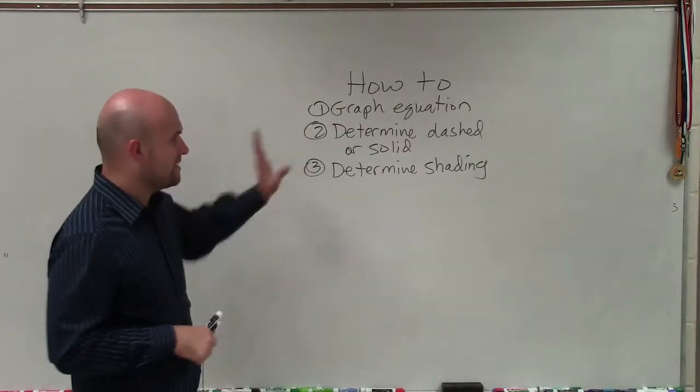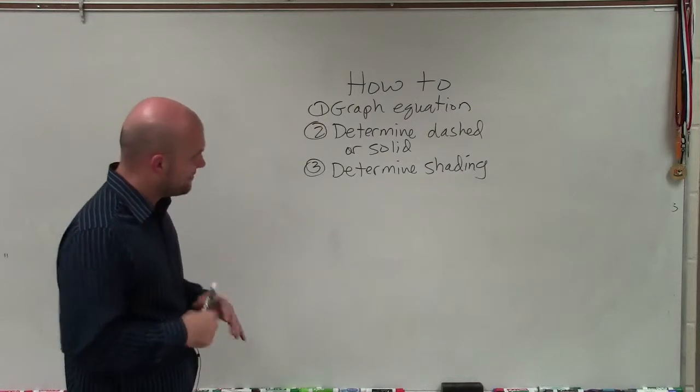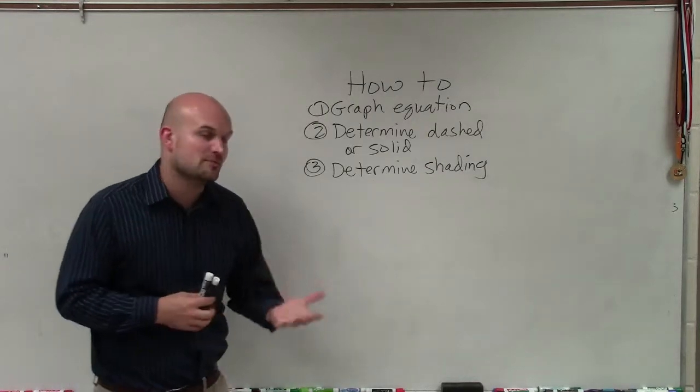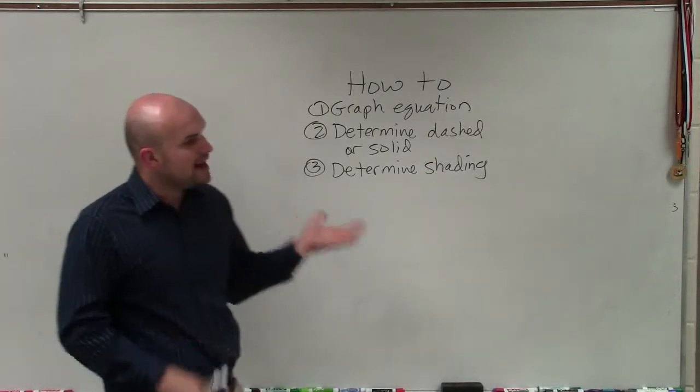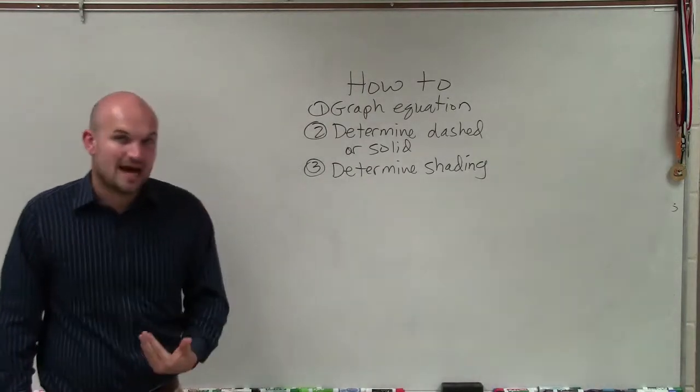Once we go ahead and graph, we have our slope, y-intercept, we've got it graphed nice. Then the next thing we want to do is determine if our boundary line is going to be dashed or solid.